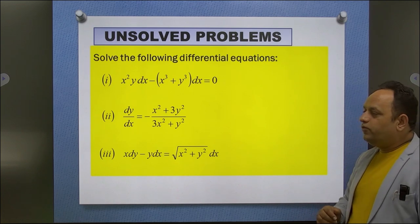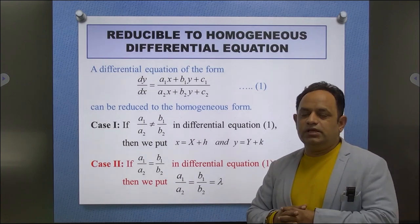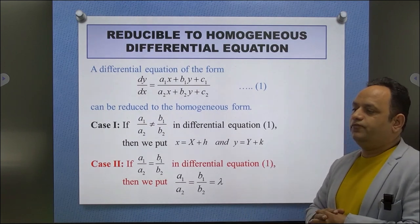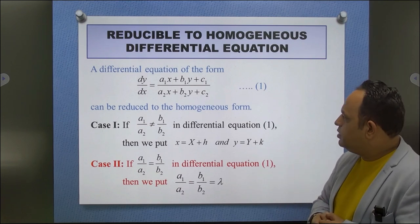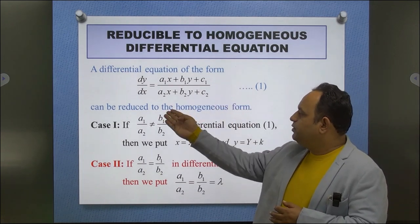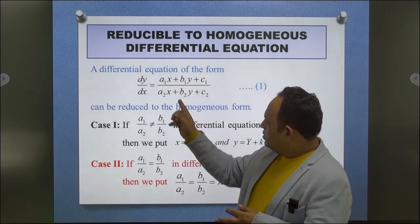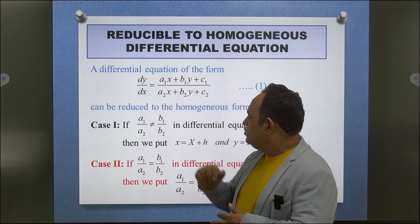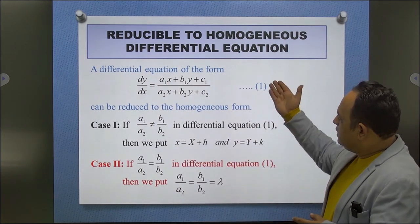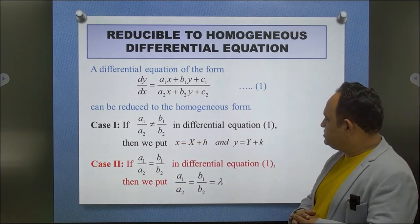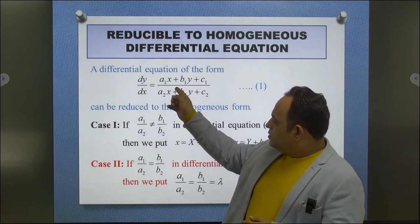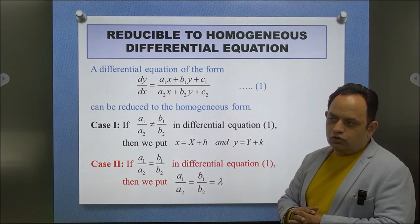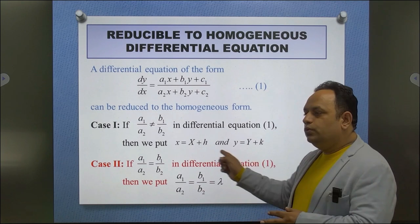Now, if the given differential equation is not in homogeneous form, we try to reduce it to homogeneous form. For equations with coefficients a₁x + b₁y + c₁ and a₂x + b₂y + c₂: if a₁/a₂ ≠ b₁/b₂, put x = X + h and y = Y + k. If a₁/a₂ = b₁/b₂ = λ, we convert to reducible to variable separable form.